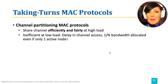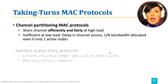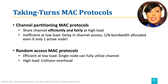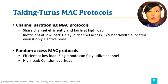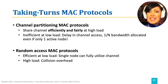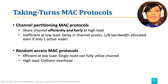Random access MAC protocols, on the other hand, are efficient at low loads. A single node can fully utilize the channel if it has frames to send. But since the access is at random, high load causes collision, and recovering from collisions adds overhead and lowers efficiency at high loads.